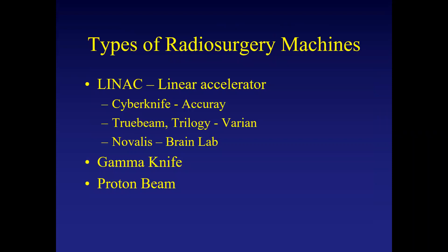The first thing to understand is that there are different types of radiosurgery machines, and you may hear these names when discussing radiation for your meningioma. The first type is called a linear accelerator, and there are different companies that make them. The CyberKnife is the machine I use at Stanford — it is a subset of linear accelerator. TrueBeam and Novalis are also trade names for linear accelerators. GammaKnife and ProtonBeam are other forms of radiosurgery machines. For this webinar, I'll specifically focus on the CyberKnife.